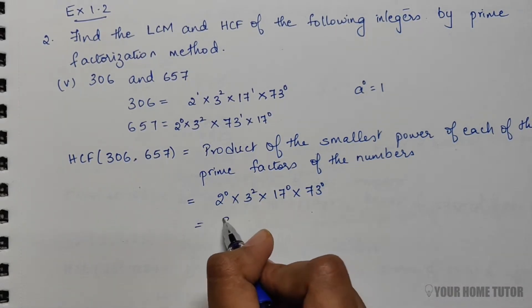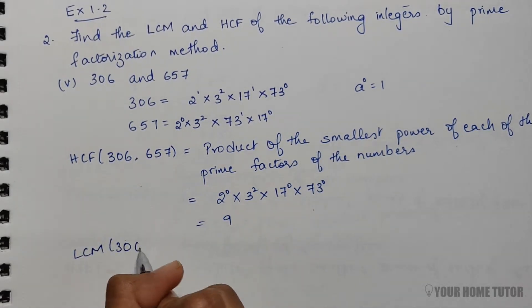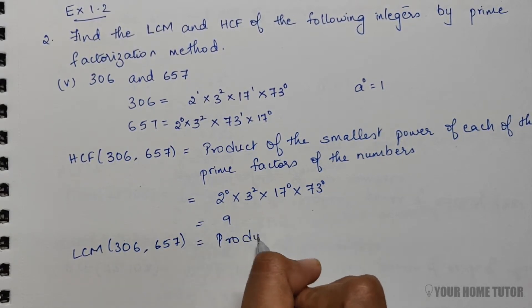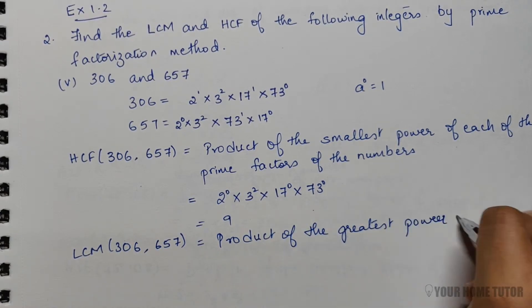For LCM of 306 and 657, it is a product of the greatest power of each of the prime factors of the numbers.